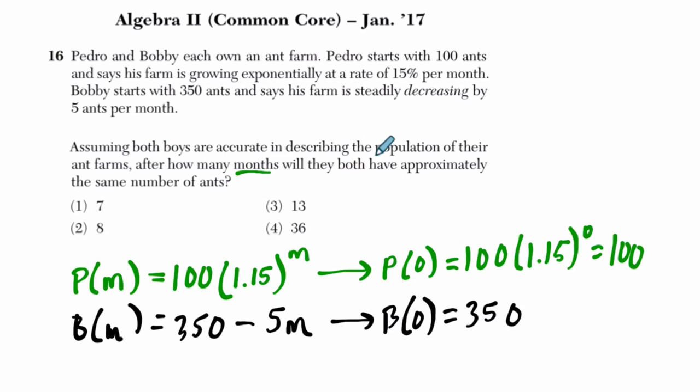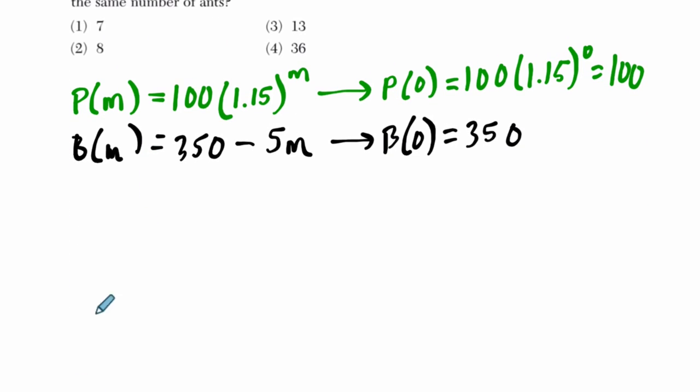Assuming that both boys are accurate, after how many months will they both have approximately the same number of ants? So you essentially want to know, let's do this in red now, when do Pedro's ants equal Bobby's ants? Now, I don't believe I know an easy way to solve this algebraically, or if there even is one. If you know one, please let me know. So for example, let me show you what I mean.